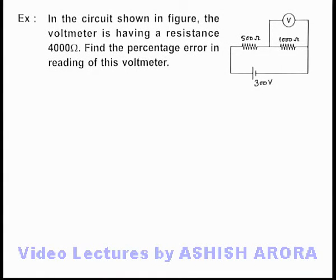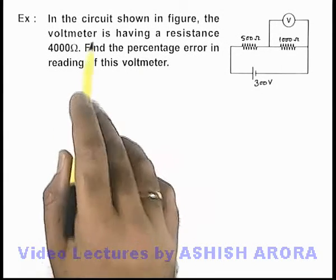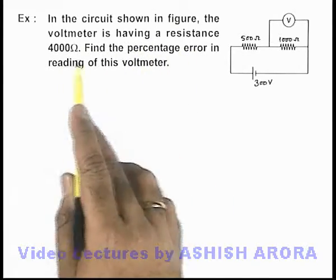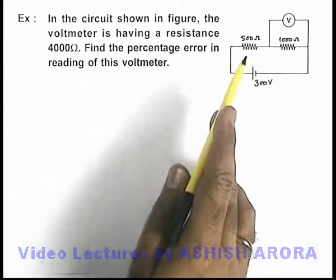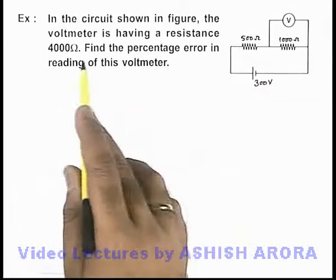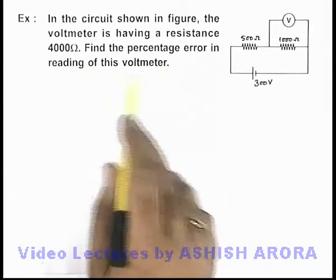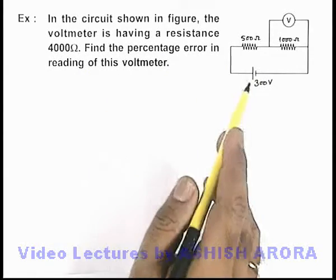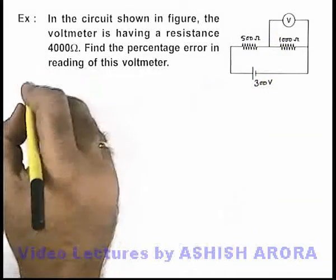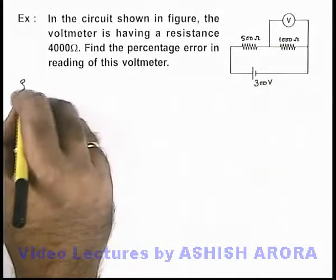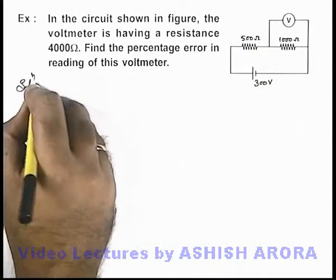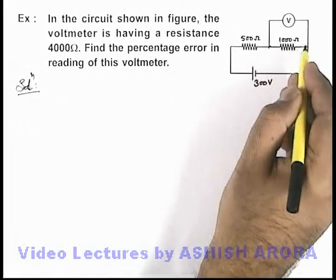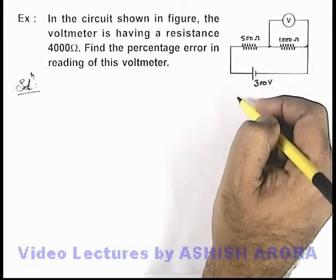In this example, we are given that in the circuit shown in the figure, the voltmeter has a resistance of 4000 ohms. We are required to find the percentage error in the reading of this voltmeter. The voltmeter is connected in parallel with the 1000 ohm resistance, meaning it is measuring the potential difference across that 1000 ohm resistance.